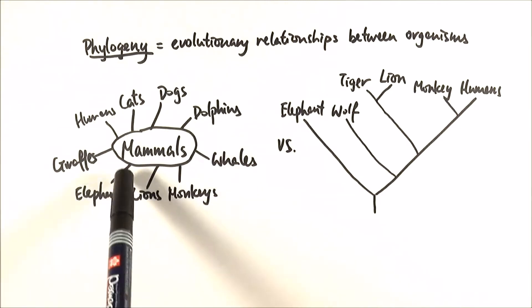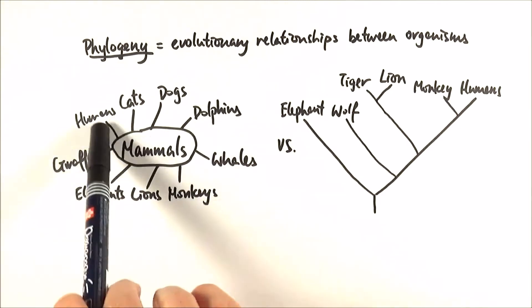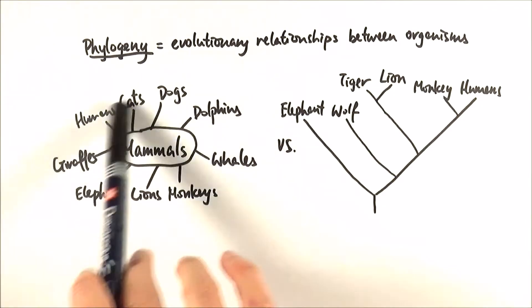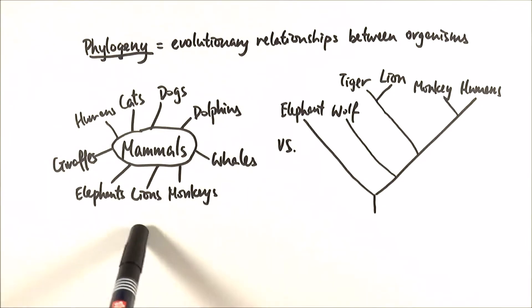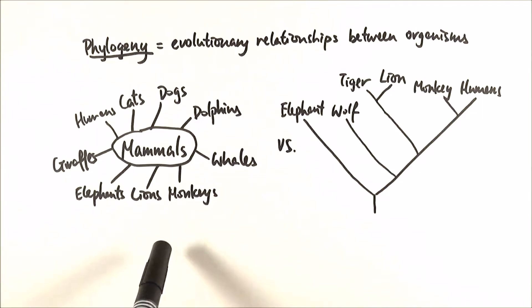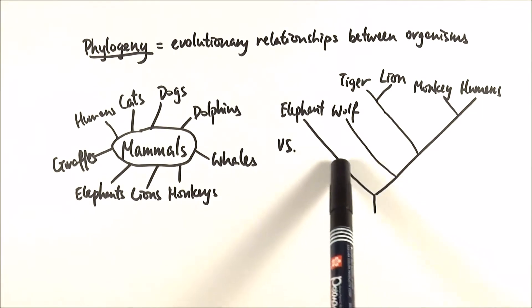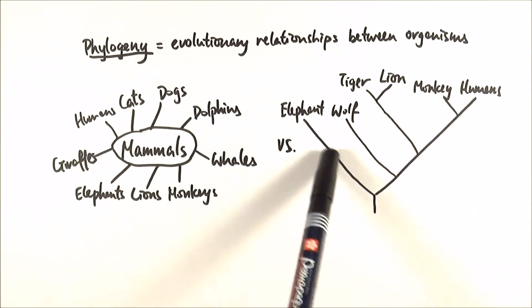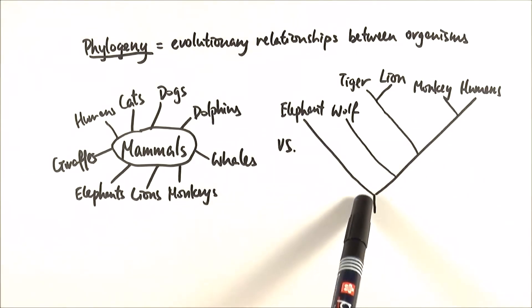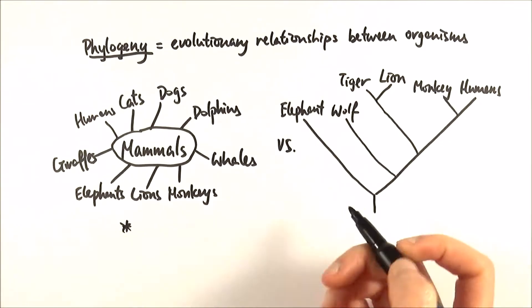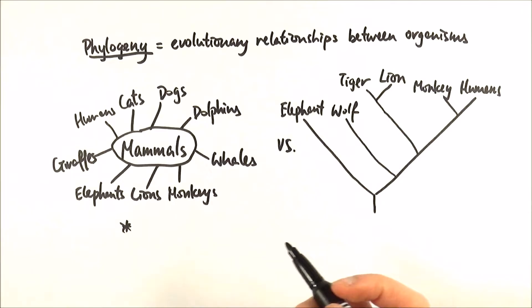They're all mammals but they're all very different, and if you think about trying to put these organisms into a linear classification, they might not all necessarily fit into their own categories. That's why a better way of doing so is to put them into a phylogenetic tree.